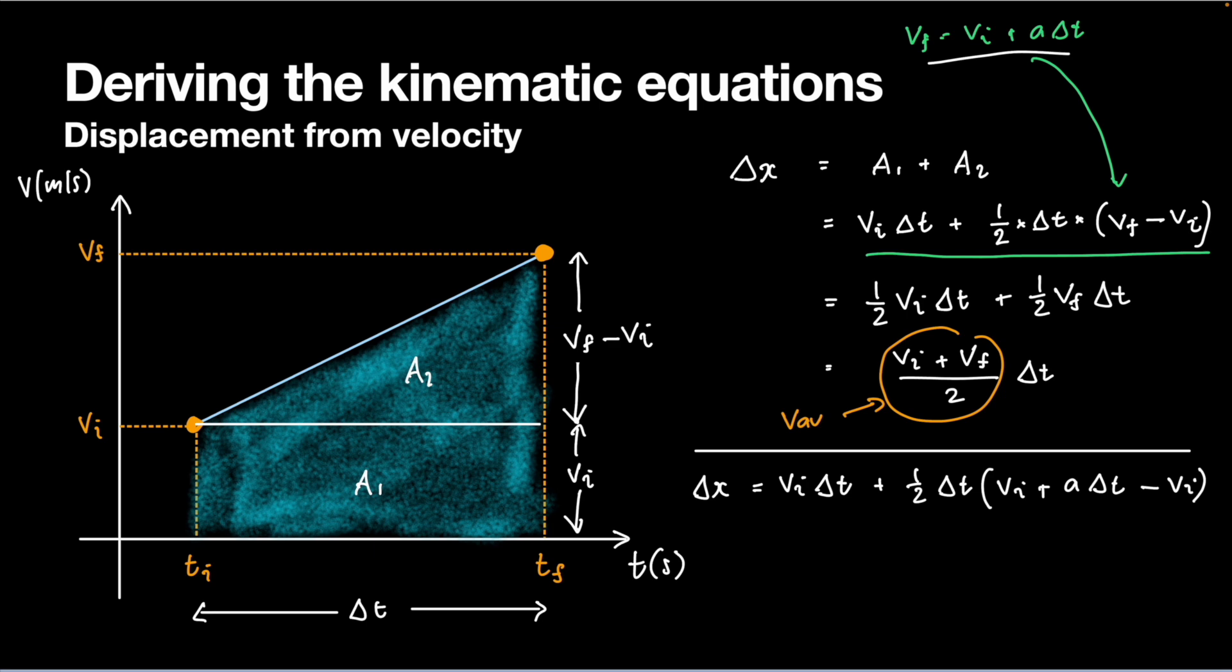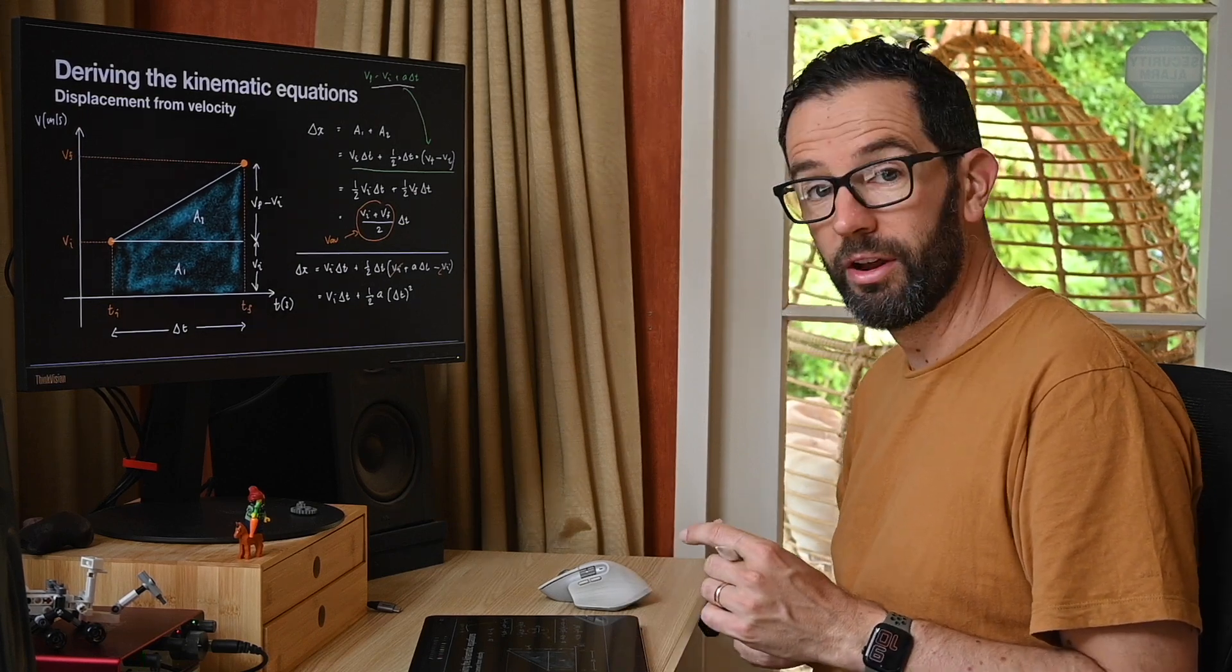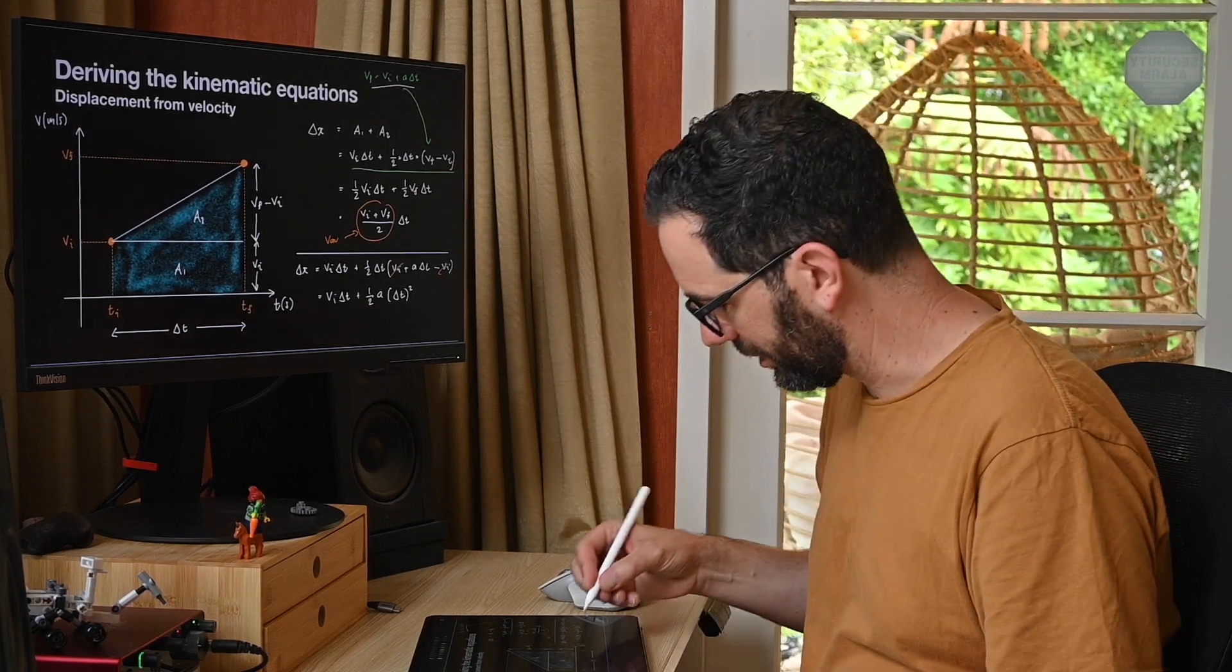These two will cancel off. And so what I'll get overall is I'll get vi Δt plus one half. Now all I've actually got left in that bracket is a Δt. So it's going to be one half a Δt times Δt, so Δt squared. So this tells me that my displacement is given by my initial velocity times Δt plus one half times the acceleration times Δt squared. So that's yet another one of the kinematic equations.